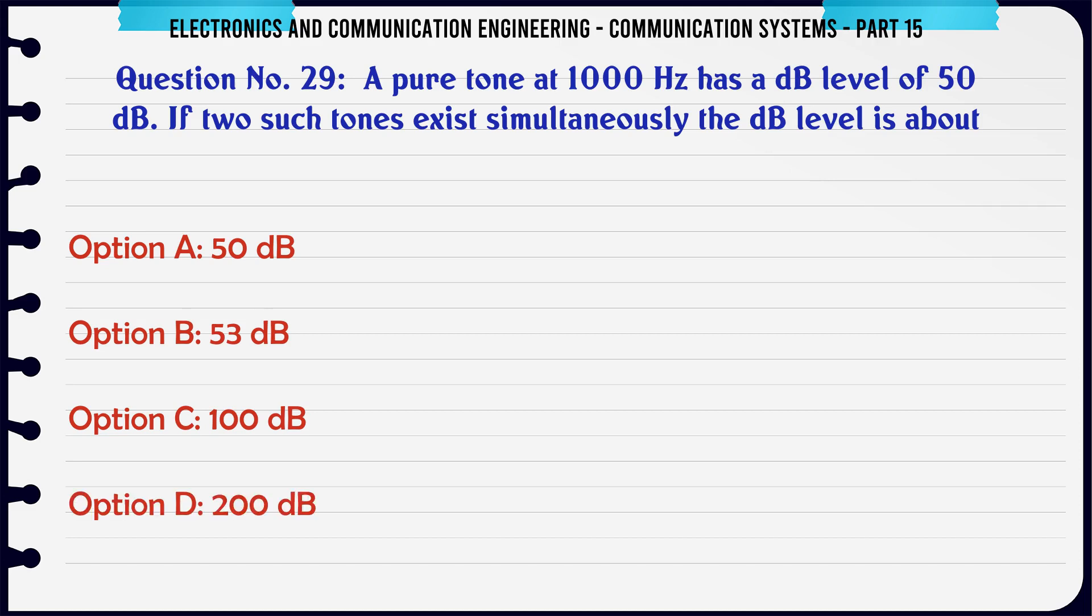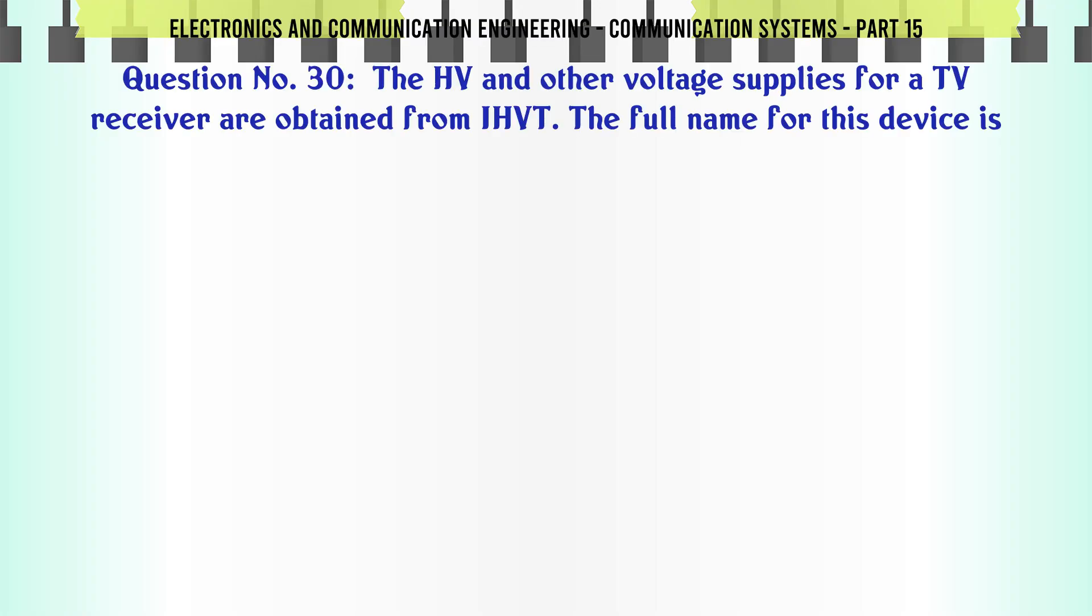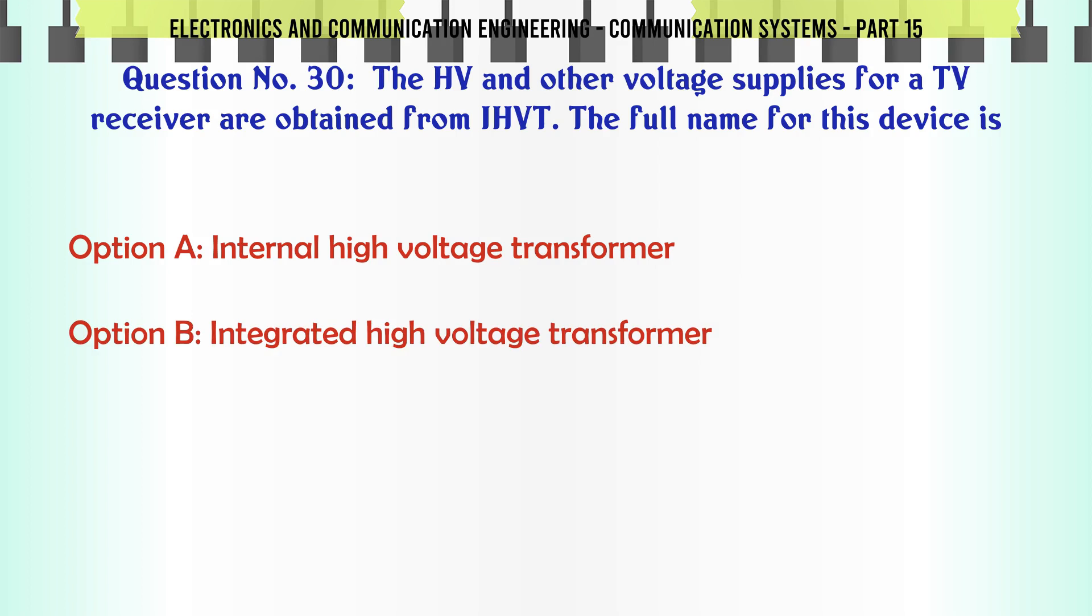A pure tone at 1000 Hz has a dB level of 50 dB. If two such tones exist simultaneously the dB level is about: A 50 dB, B 53 dB, C 100 dB, D 200 dB. The correct answer is 53 dB.